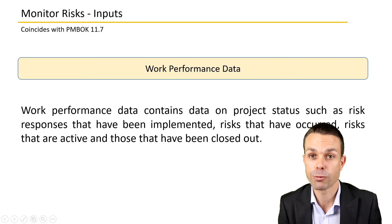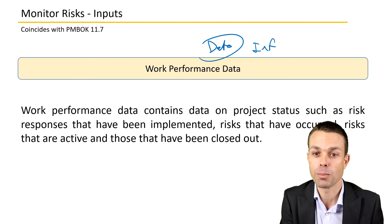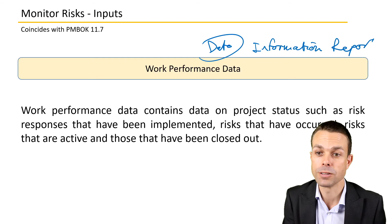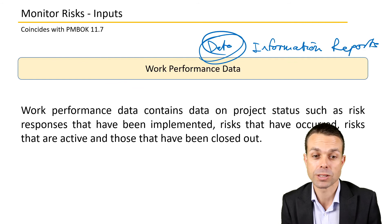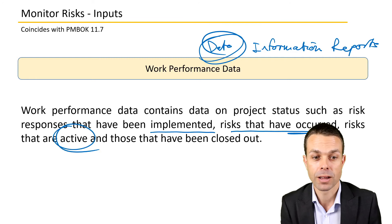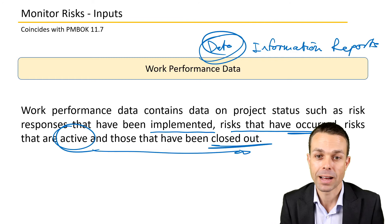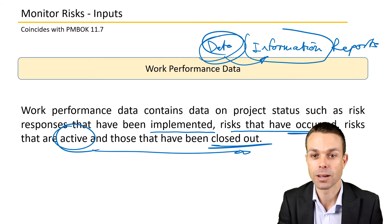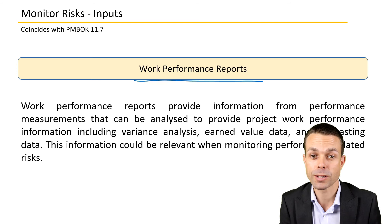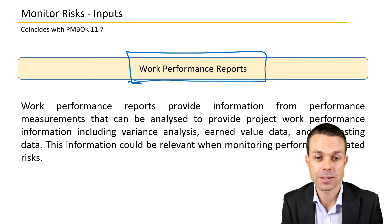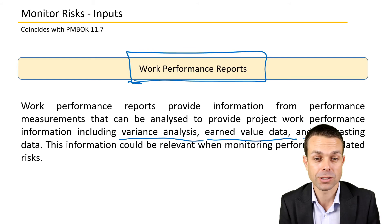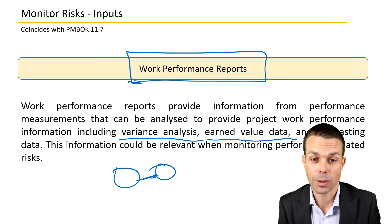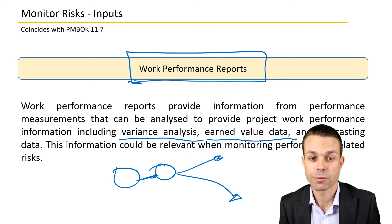Inputs we may need include work performance data — the raw data, because data turns into information and information can be turned into reports. This covers which risk responses have been implemented, risks that have occurred, risks that are currently active, and ones that have been closed out. This is pure factual information. That can go into work performance reports, because we need to know what has been sent previously to our stakeholders — things like variance analysis, earned value data — all comparing current versus actual performance and any forecasting based on that. This information can be relevant when monitoring performance-related risks.